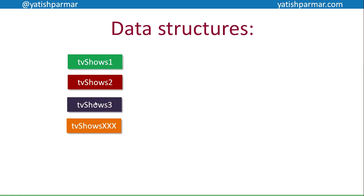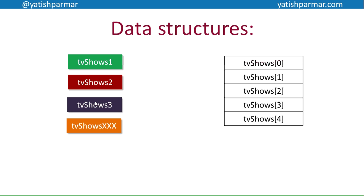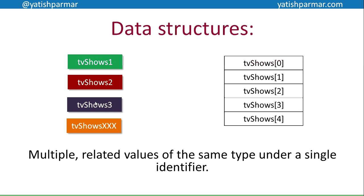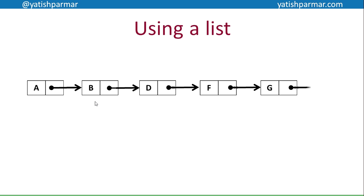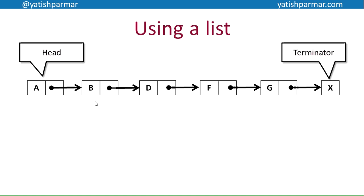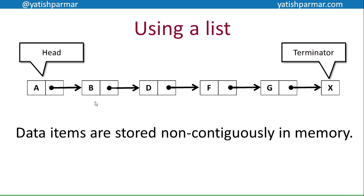Quick recap on data structures — remember we talked about having lots of variables to store similar related data becoming unmanageable, so we use a data structure grouping multiple related values of the same type under a single identifier. Last video looked at using a list where nodes hold data, each node has a pointer to the next node, and a terminator signifies the end of the list. The advantage over an array is that data items are stored non-contiguously, so you can keep adding data and shifting the pointer to point to the next node as required.